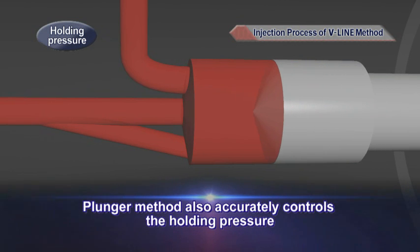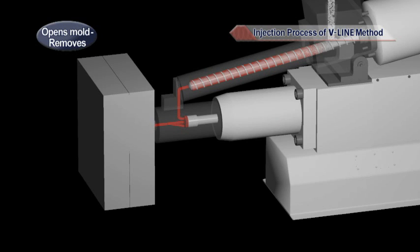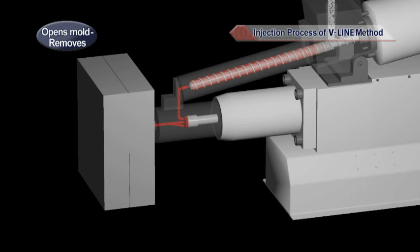Since a non-friction plunger method is used, the holding pressure can also be controlled accurately. After the set cooling time has ended, the mold is open to remove the product. Subsequently, the mold closes again to repeat the same process.